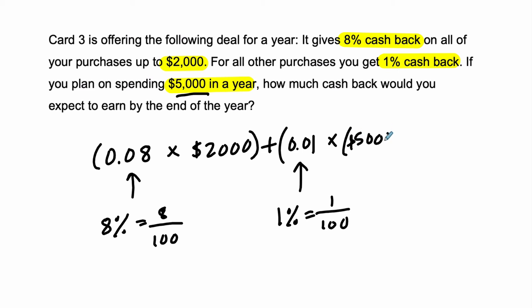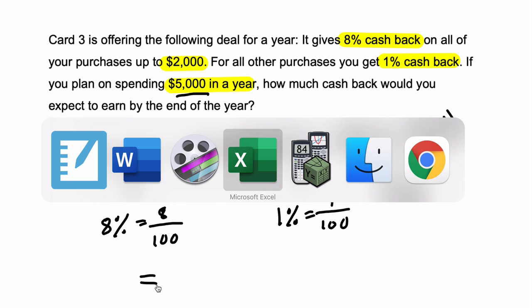Let me erase that 2, minus $2,000, which is, of course, $3,000. I'm just showing you what the number looks like. This is that $3,000 that you're spending beyond the $2,000. You'll get 1% on that. So, we put this all together, and that'll tell us our cash back.